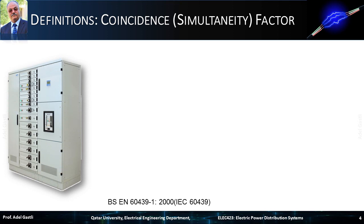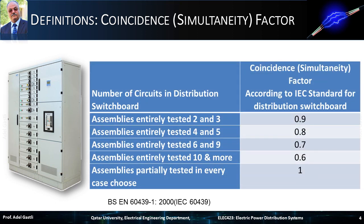Standards such as the IEC have defined some standard coincidence factor values for a distribution switchboard, which can be used by designers when they conduct a load study. This table lists some of these values depending on the number of circuits. IEC classifies assemblies into type-tested assemblies and partially type-tested assemblies. Type-tested assemblies conform to an established type or system without deviations likely to significantly influence performance from the typical assembly verified to be in accordance with the standard; a full range of representative configurations have been tested. Partially type-tested assemblies contain both type-tested and non-type-tested arrangements, where the latter are derived, for example by calculation, from type-tested arrangements which have complied with the relevant tests, and only some limited configurations may be tested.